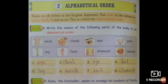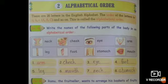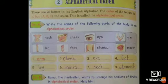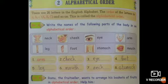In alphabetical order, A comes before B, B comes before C, C comes before D, D comes before E. The letters are arranged in serial order. When letters are arranged as A, B, C and so on, that is called alphabetical order. So now we have to solve an exercise.